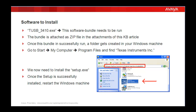The software that we have to install is TUSB_3410.EXE. This software bundle needs to be run on our laptops. The software bundle has been attached as a zip file with the attachments of this particular KB article. Once this bundle is successfully run, a folder gets created inside our Windows machine. To locate the folder, go into Start, My Computer, Program Files and find the Texas Instruments Incorporated folder.